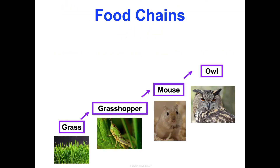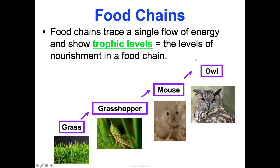Something you may be familiar with from elementary or middle school science is a food chain. This is like a picture or a map of where the energy is flowing, and it only goes one direction — it shows where the energy is going. So from grass to the grasshopper: grass doesn't eat grasshoppers, grasshoppers eat grass. It traces a single flow of energy.